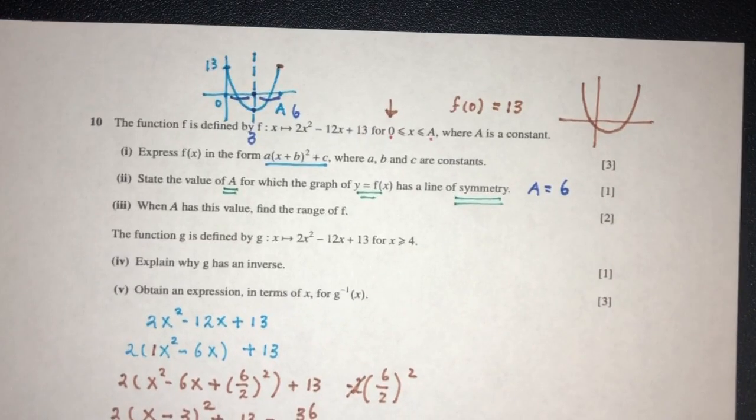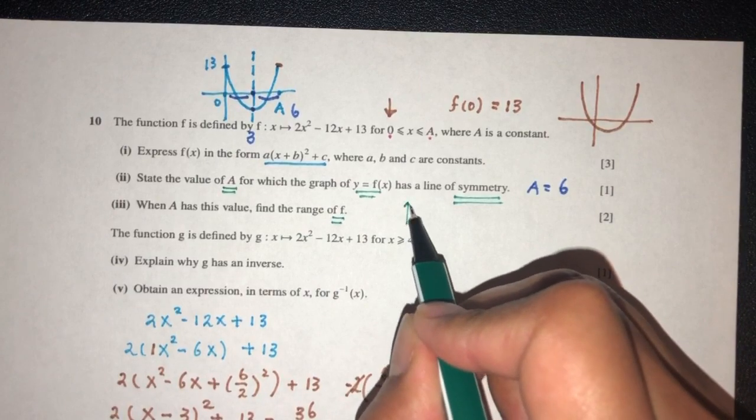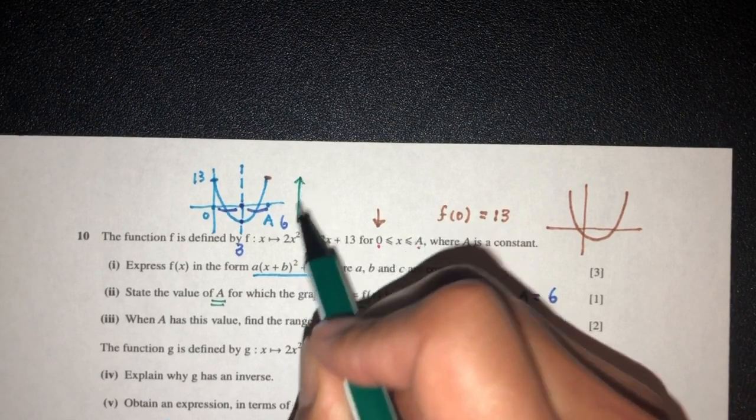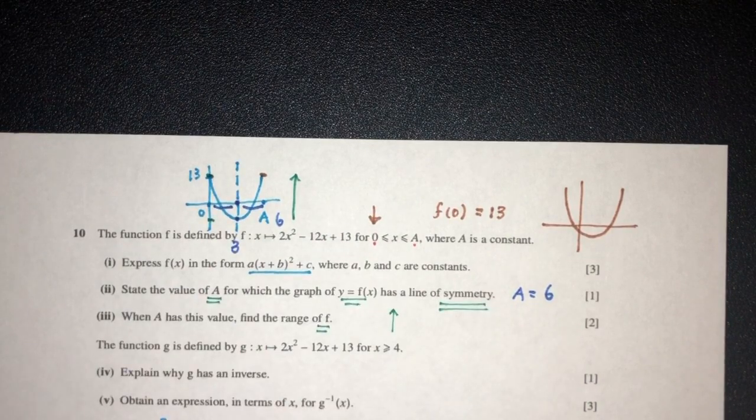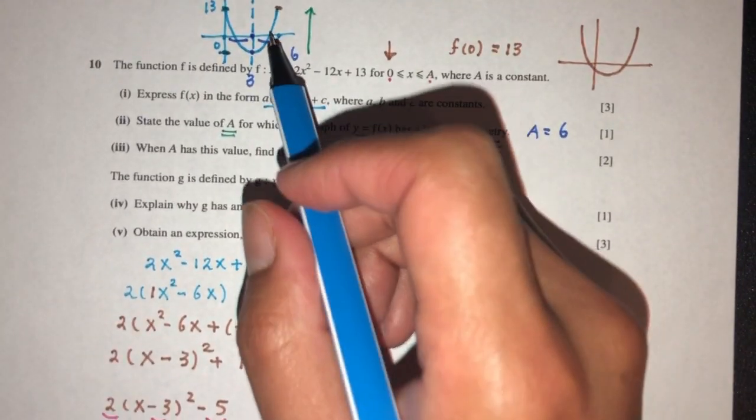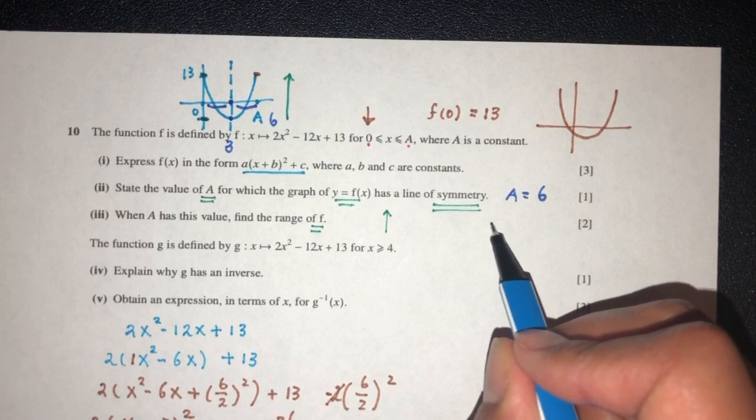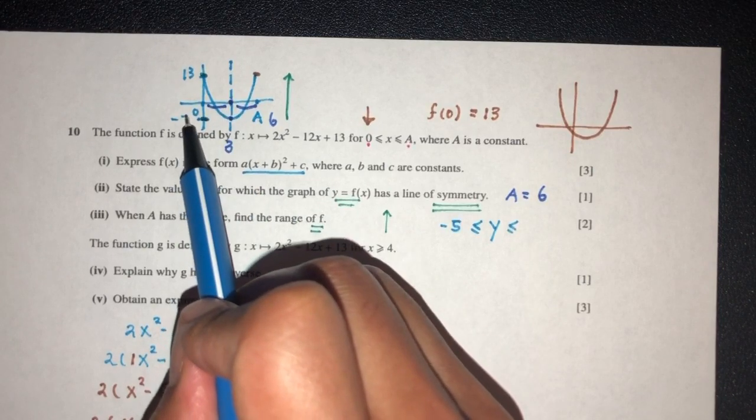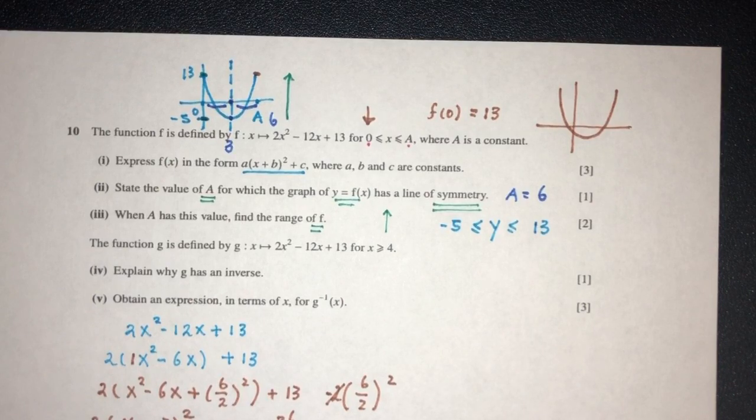Now for part 3, when the value of a has this value, find the range of f. The range of f is the y value of f. So by observation, you can see the value of f is between those two, between this point here and the max value here. This is the point when the value of x is 3. That will be the value of dn, which is minus 5. So f, or the range, you can write y between the value of minus 5, that's the minimum value here, and the max value is 13. That is part 3 of the question.